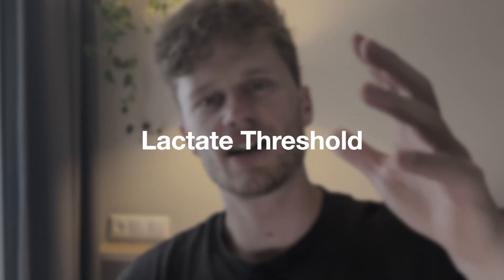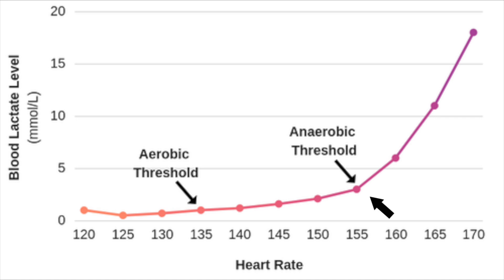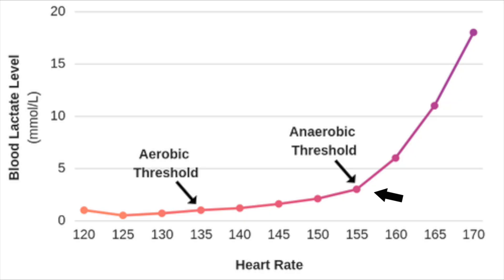In a lab test, you measure your lactate levels, and at some point those lactate levels start to increase exponentially — at this point you have reached your threshold. That point, at this speed or this wattage, is your lactate threshold. If you plot all your data onto a chart, you will see the line go up exponentially, and this is where you know you have reached your lactate threshold.